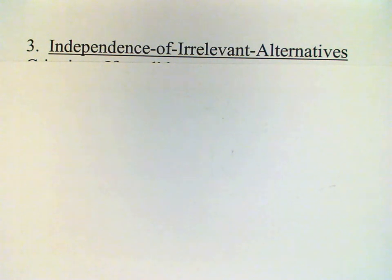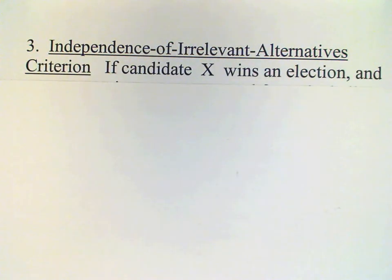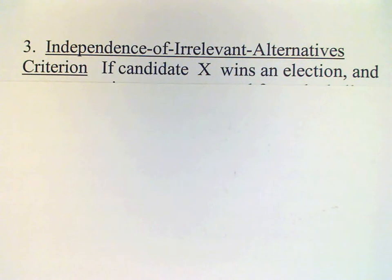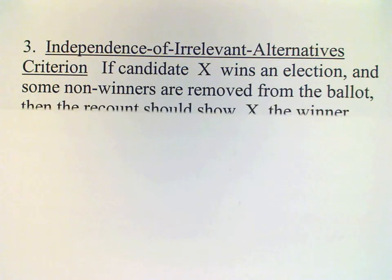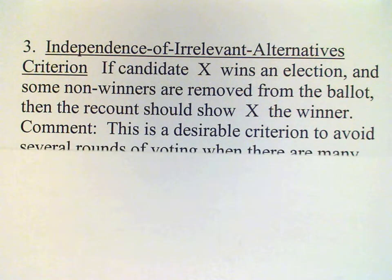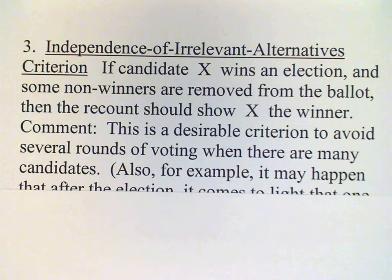Our next criterion has the rather long-winded name of the Independence of Irrelevant Alternatives criterion. Basically, if we have a non-winner in the election and that non-winner is removed, we don't want that to affect the outcome. Formally stated: if candidate X wins an election and some non-winners are removed from the ballot, then the recount should show that X is still the winner.